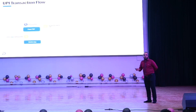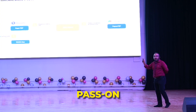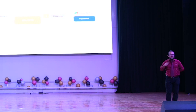Let's assume you are transferring some funds from your PhonePe to someone who has a Google Pay UPI ID. When you initiate the transaction from PhonePe, PhonePe passes on your bank information to NPCI. NPCI then processes based on the UPI ID that you have entered — in this case, the Google Pay account.